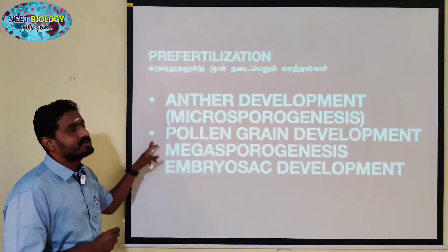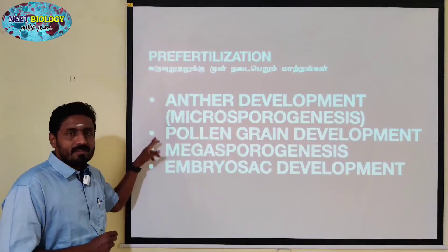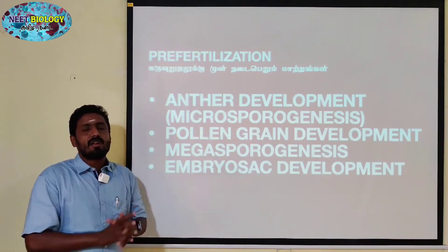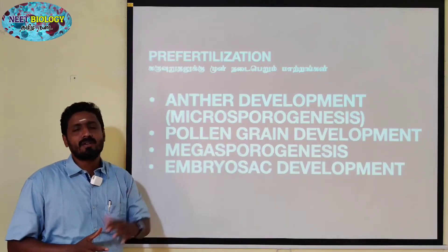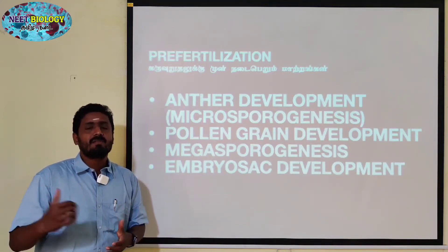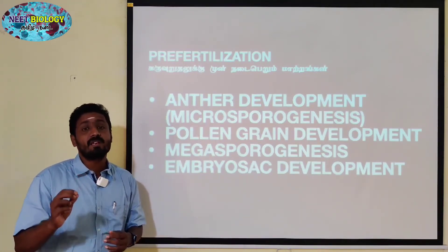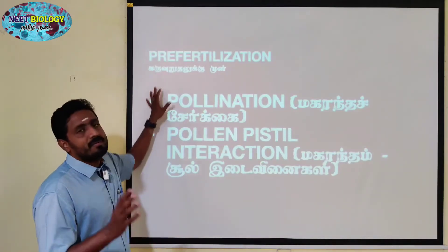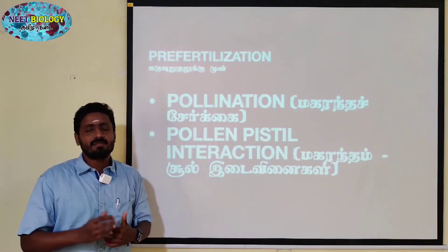There is the male and female — Androecium and Gynoecium. From the embryo sac, we get the egg cell. This is the pre-fertilization process. The pollination process is the transfer of pollen grains from the anther to the stigma.